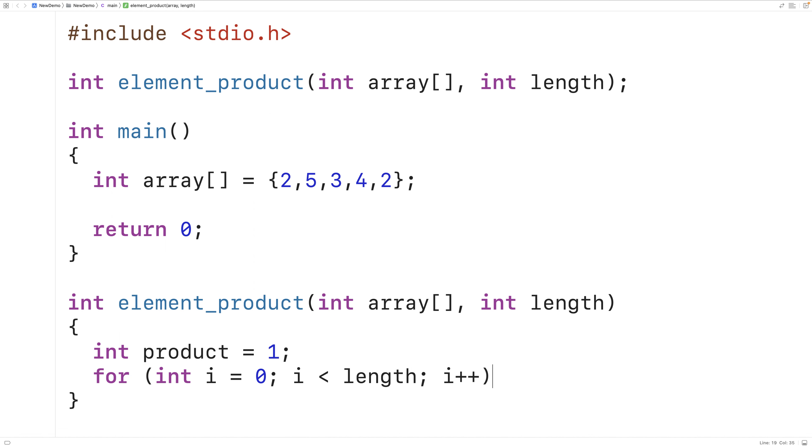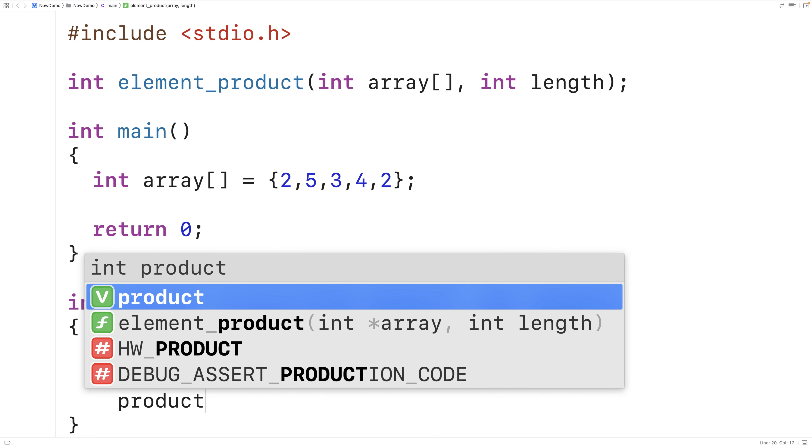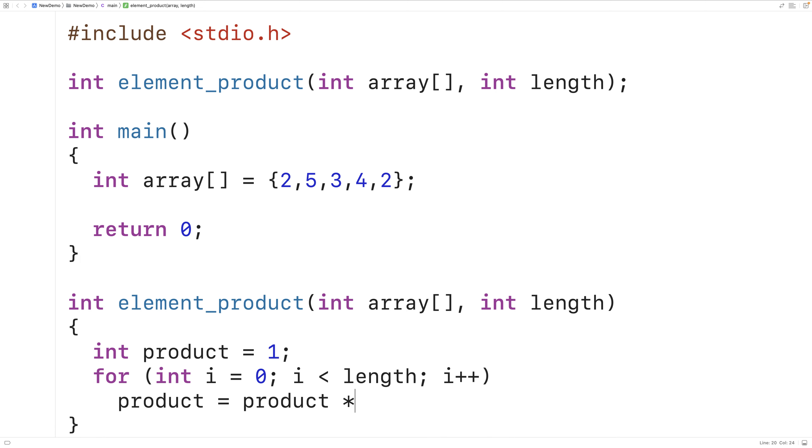Using the counter variable i, we're going to go from zero up until the length of the array. We're going to take each element and multiply it by the product and store the result back into product. We can shorten this to times equals, which would be equivalent.